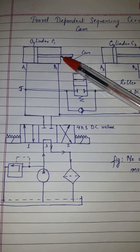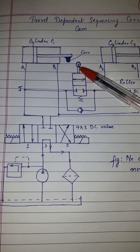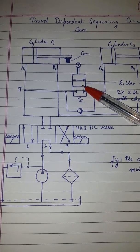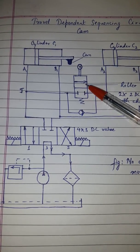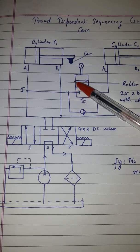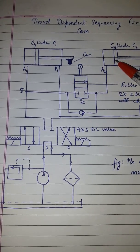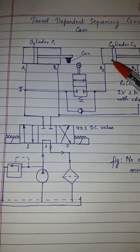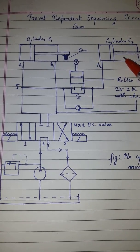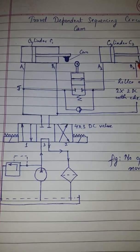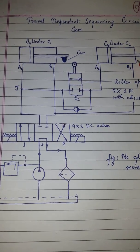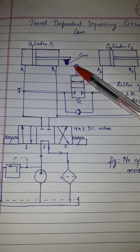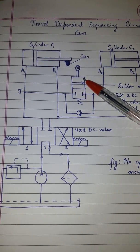The piston will move towards the right. During this movement, the CAM will press the roller, operating the roller-operated 2x2 DC valve. This connection will go to the other side and the flow will go to cylinder C2 through port A2. Cylinder C2 then starts its movement and the piston in this cylinder moves towards the right. Thus, the movement of C2 will start only after the CAM operates the 2x2 DC valve.